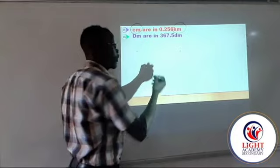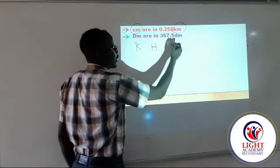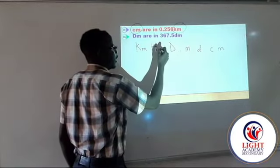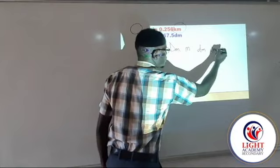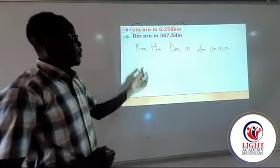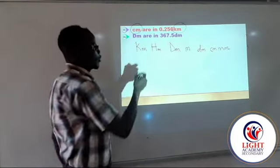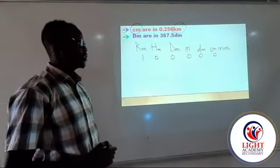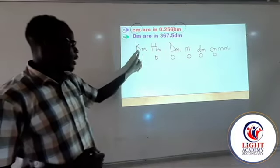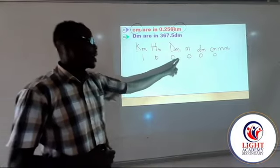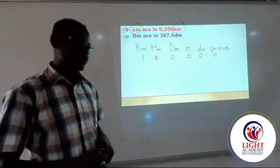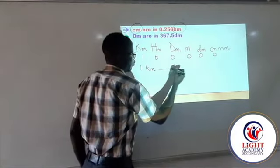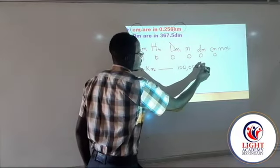In your mnemonic statement you have: King Henry's daughter Mary blank cold milk, representing kilometer, hectometer, decameter, meter, centimeter, and millimeter. We are comparing kilometers and centimeters. You write 1, 0, 0, 0, 0 until you reach centimeters. This tells you that in 1 kilometer, we have 100,000 centimeters. Isn't that beautiful? 1 kilometer contains 100,000 centimeters.